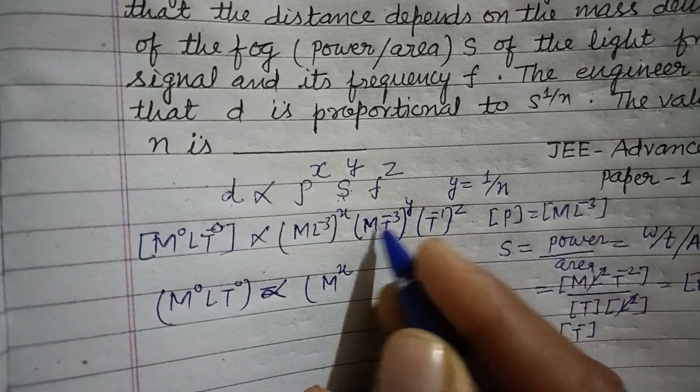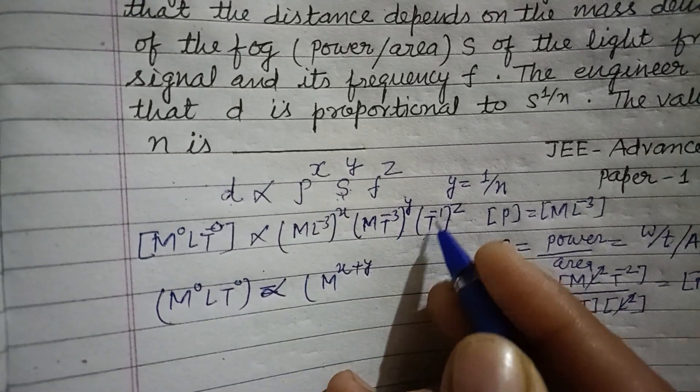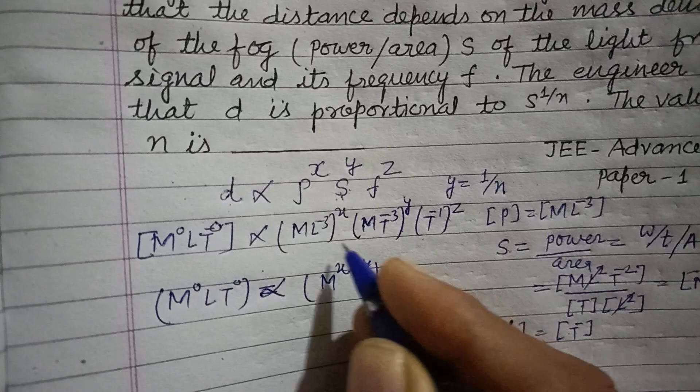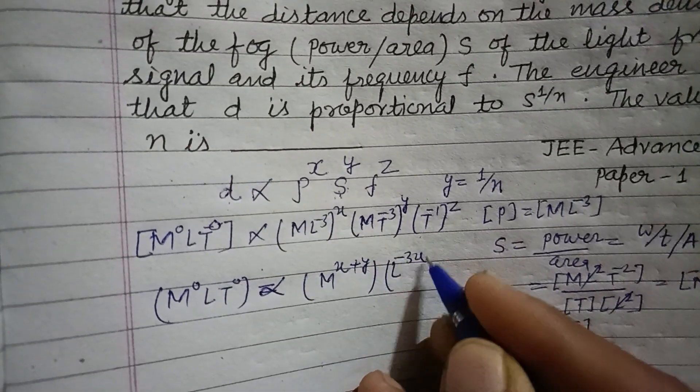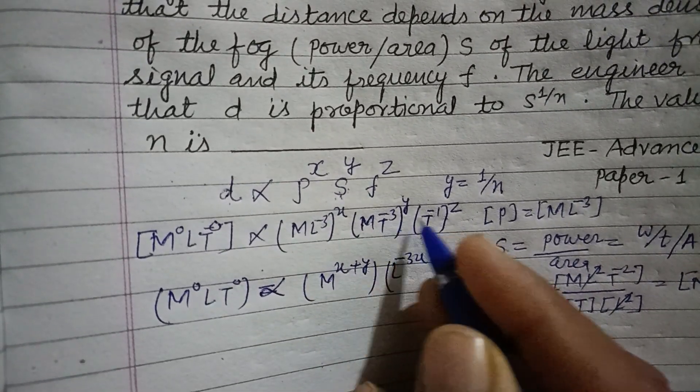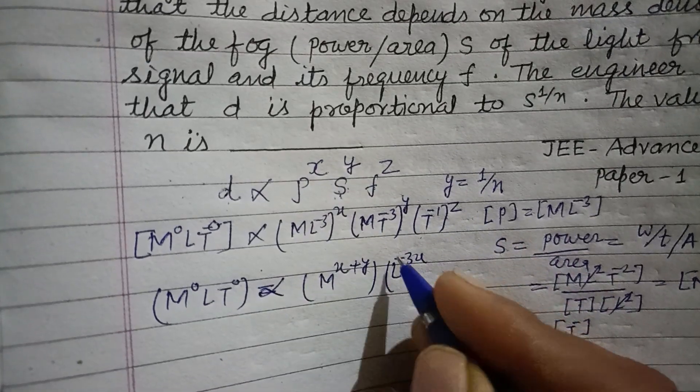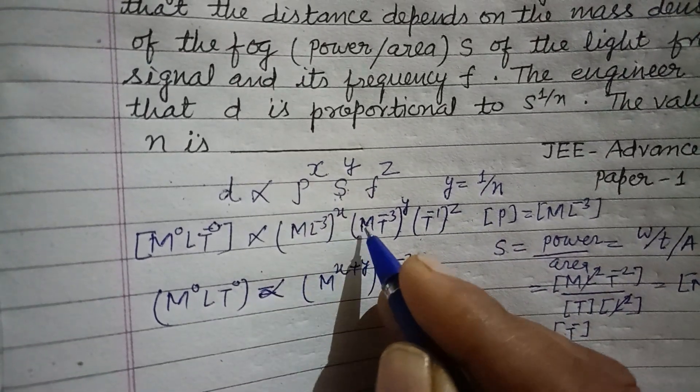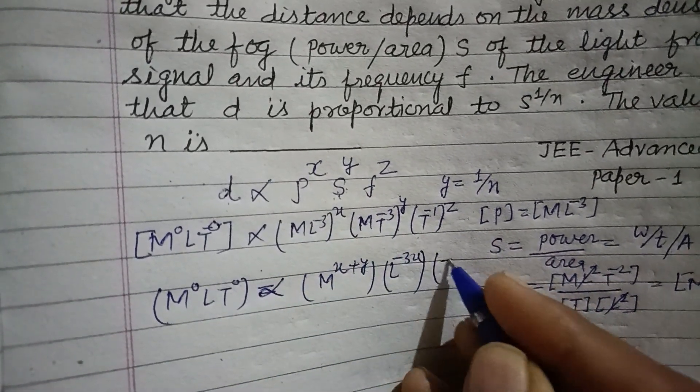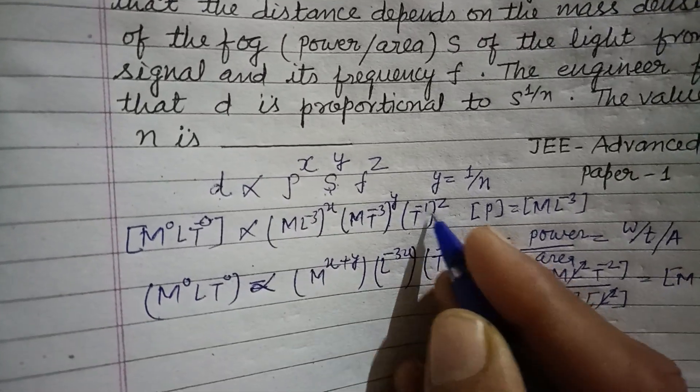And L to the power minus 3x here, and only minus 3x, and T to the power minus 3y minus z here.